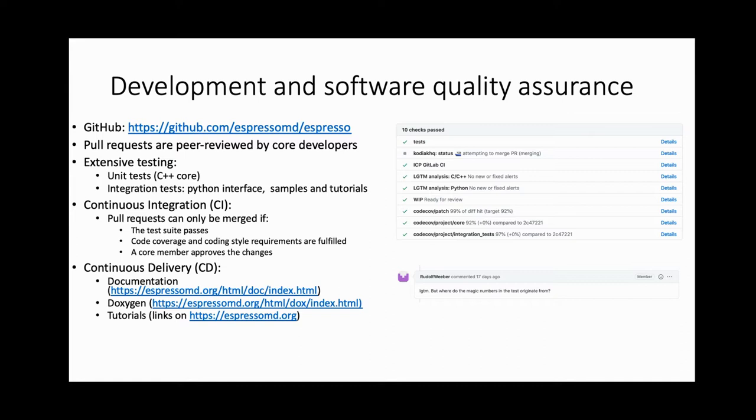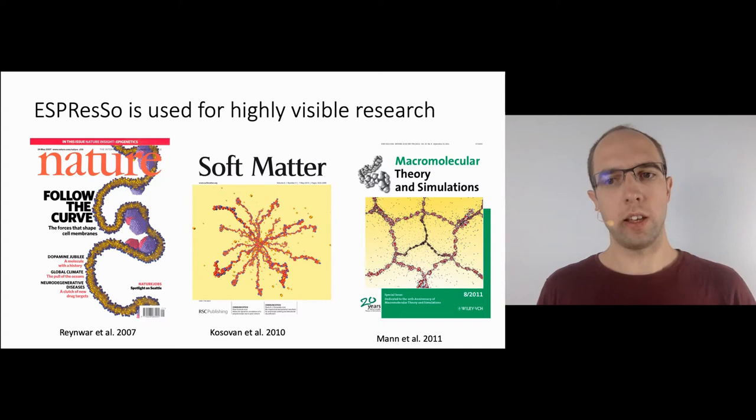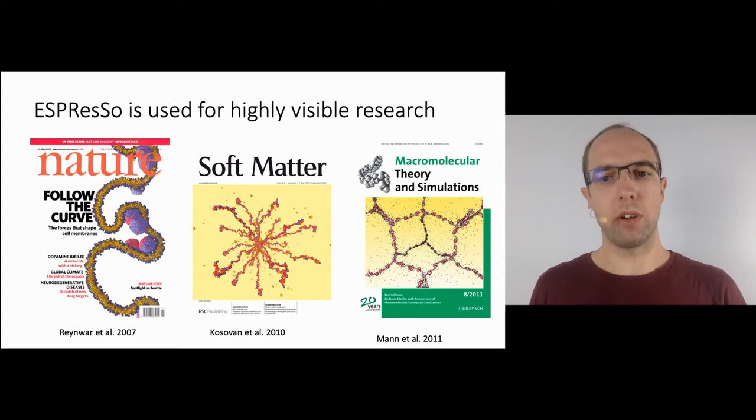ESPResSo is around since about 2001 and has proved to be a suitable tool to perform soft matter research that is highly visible. Here we just picked three examples that made it to the cover of the journal. I will talk about the Nature publication on the left-hand side on the next slide. The publication shown in the middle is about star polyelectrolytes in a poor solvent where they investigated morphologies in dependence of the number of arms.